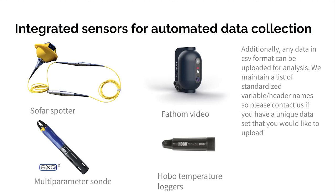We also realize there's a lot of other information that needs to be collected, so we have an integration with the YSI multi-parameter sonde, giving you the ability to collect things like pH, dissolved oxygen, alkalinity, and so on. We're also backwards compatible with HOBO temperature loggers, and we have the ability to support uploading all of that information into Aqualink. The platform has the capability to upload almost any CSV data — we need a standardized list of header or variable names, but once a spreadsheet is structured in that way, you can upload it and take advantage of the platform's capabilities.